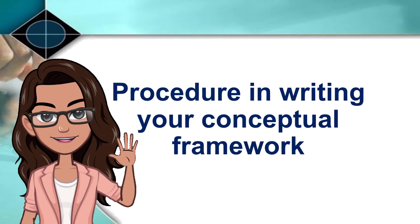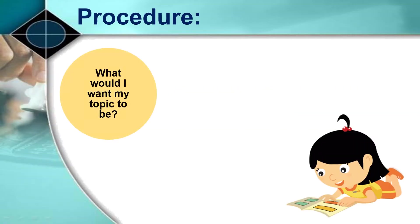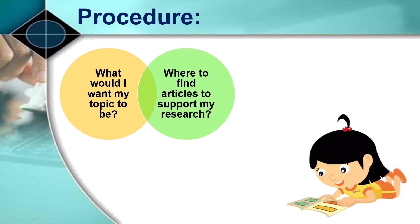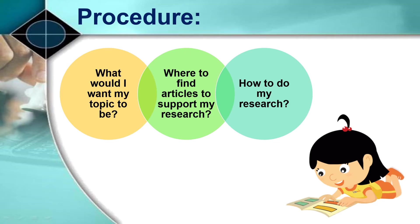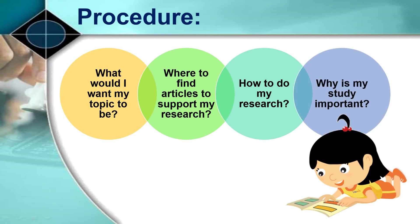Moving on, let's have the procedure in writing your conceptual framework. Remember that it should be within your field of specialization, your track or strand. Two, where to find articles to support my research — you should look for valid and reliable sources in doing a literature review; start with Google Scholar. Three, why is my study important? While selecting and collating your literature review, you should also look for variables that are important in your research and connect them to your topic. Four, how to do my research — this is where you should create your plan and make a conceptual framework based on the literature you've gathered.